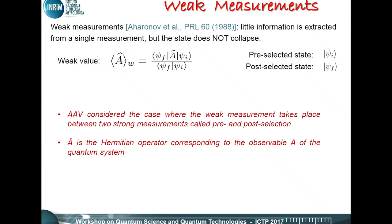So we have an initial state and a final state. If we want to evaluate an observable of the system, represented in this case by the operator A, the definition of the weak measurement and of the weak values gives this formula.